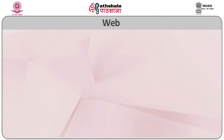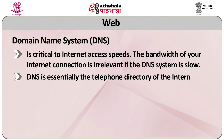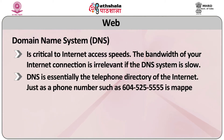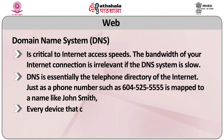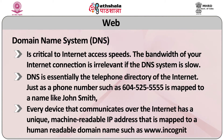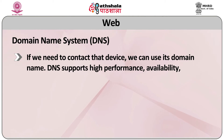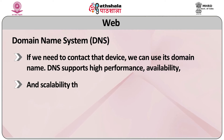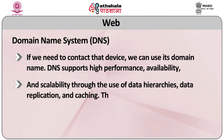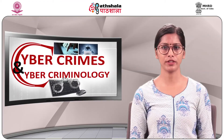An effective domain name system, that is DNS, is critical to Internet access speeds. The bandwidth of your Internet connection is irrelevant if the DNS system is slow. DNS is essentially the telephone directory of the Internet. Just as a phone number such as 6045255555 is mapped to a name like John Smith, every device that communicates over the Internet has a unique machine-readable IP address mapped to a human-readable domain name such as www.incognito.com. DNS supports high performance, availability and scalability through the use of data hierarchies, data replication and caching. The three main components of the DNS system are domain name space, name server and domain name resolution. A brief overview about email will also be provided here.